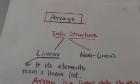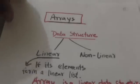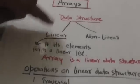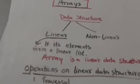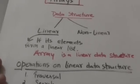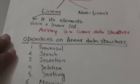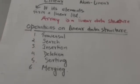Hello friends, welcome back. In this tutorial we will study about arrays. Data structures are classified into two categories: linear and nonlinear. A data structure is said to be linear if its elements form a linear list. Array is a linear data structure. These are the operations which can be performed on any linear data structure.